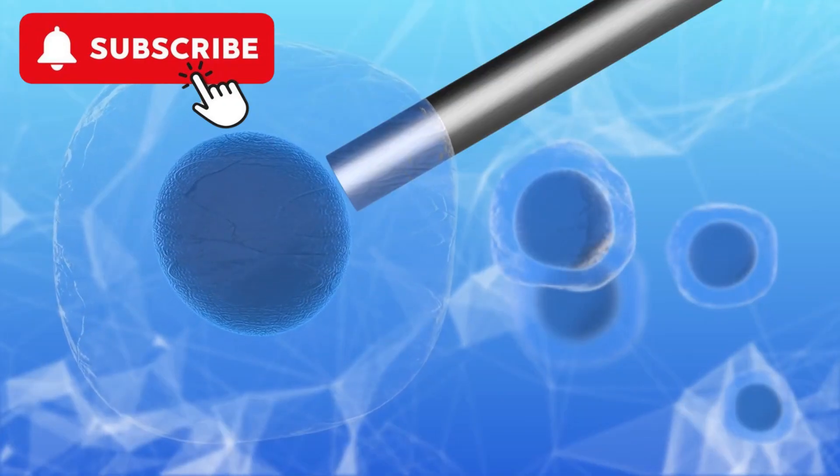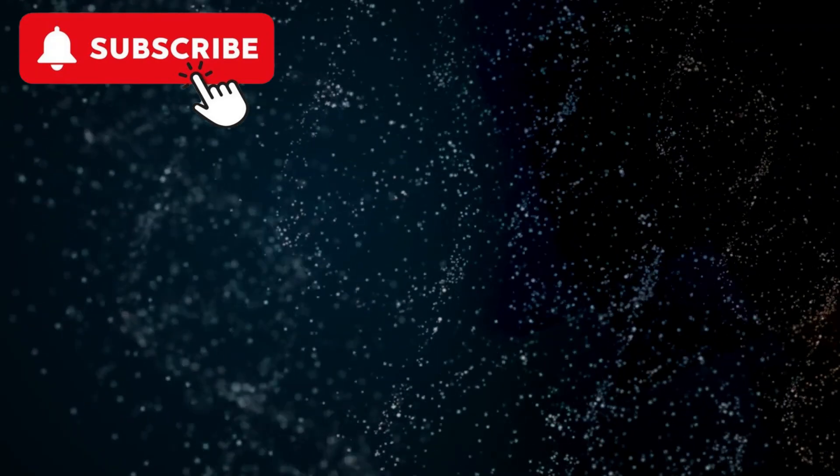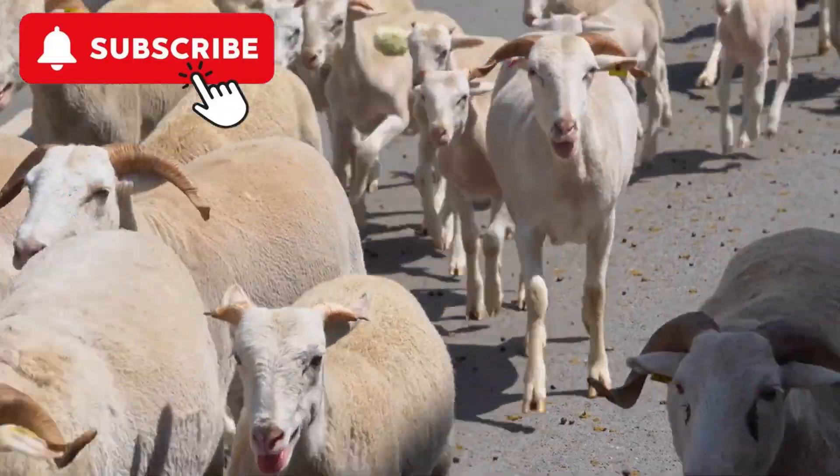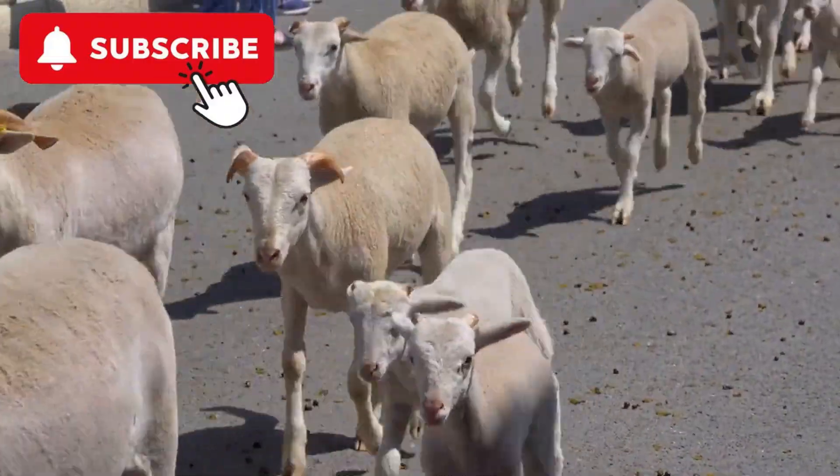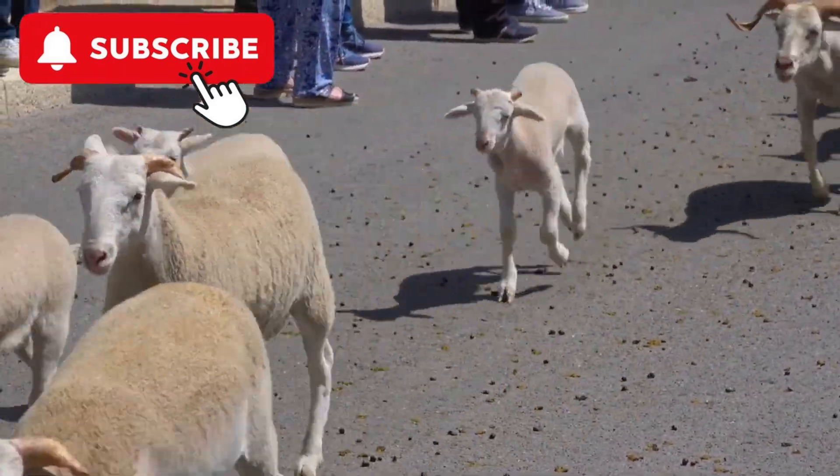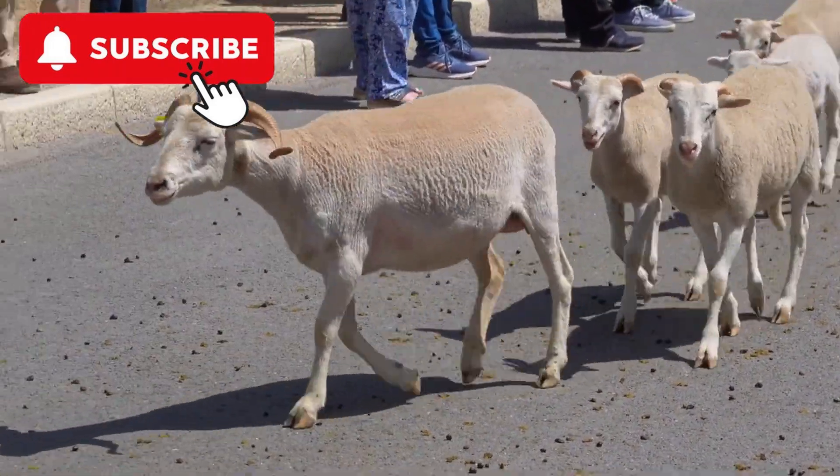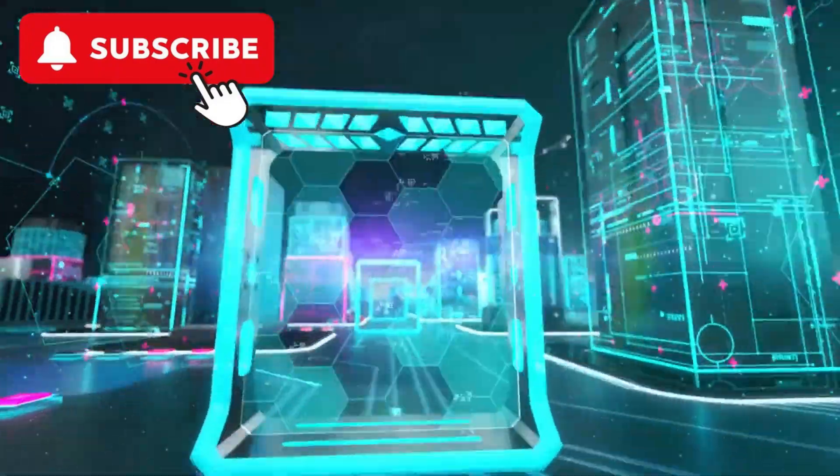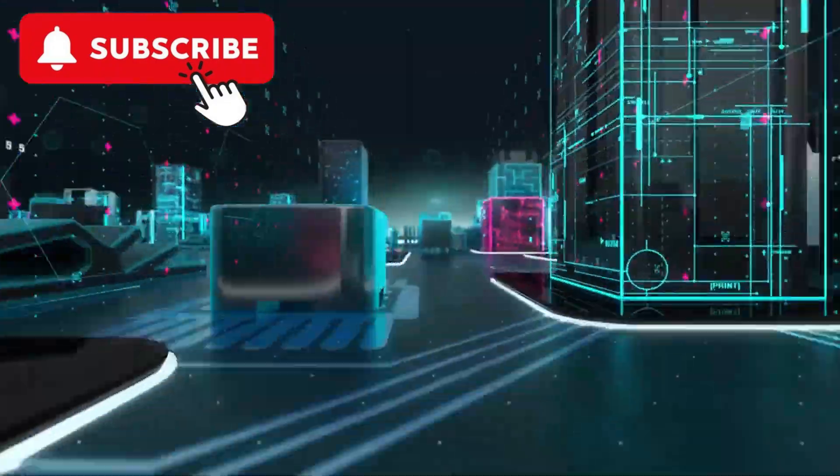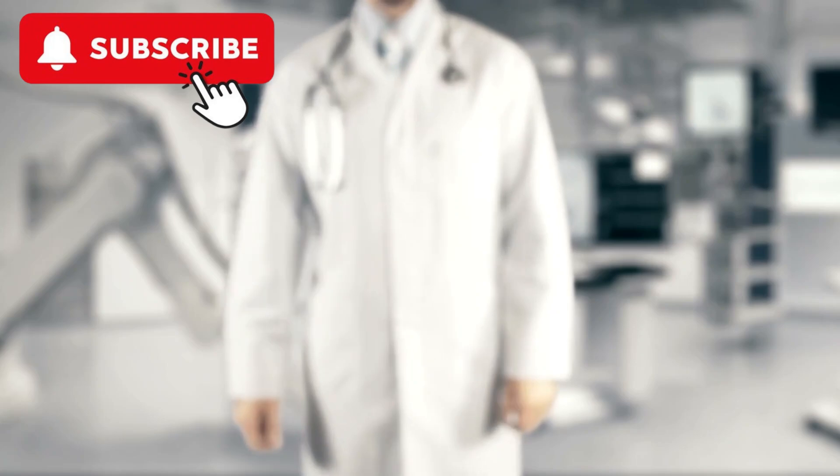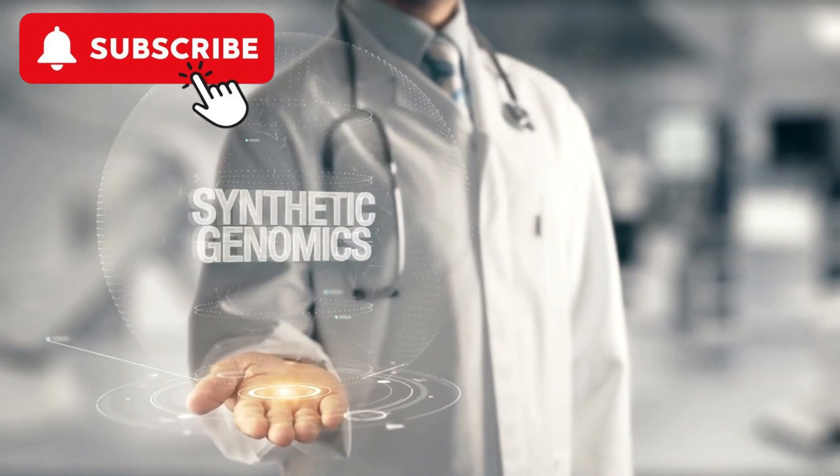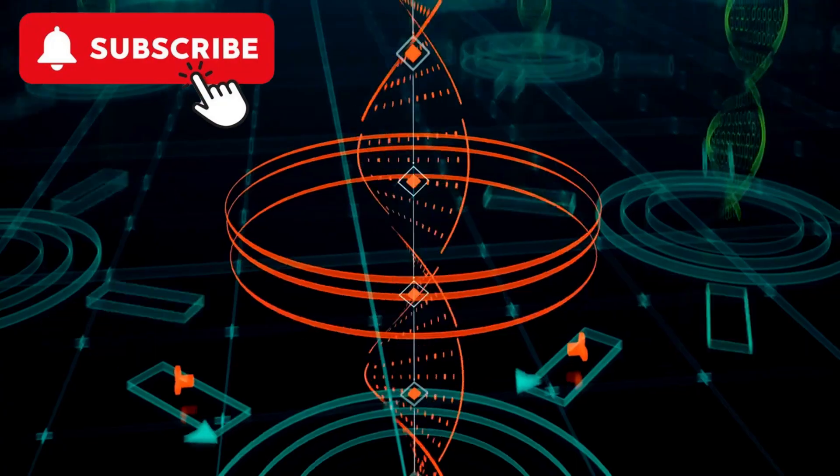Cloning and synthetic biology. Cloning involves creating genetically identical copies of an organism or cell. Techniques like Somatic Cell Nuclear Transfer (SCNT) have been used to clone animals such as the sheep Dolly and pets. Synthetic biology combines biology and engineering to design and construct new biological parts, devices, and systems. This field aims to create synthetic life forms and novel biological functions.